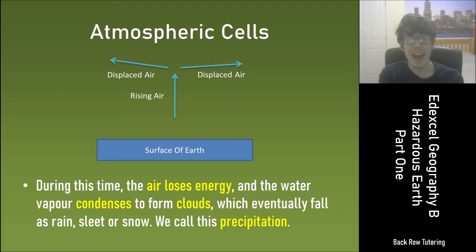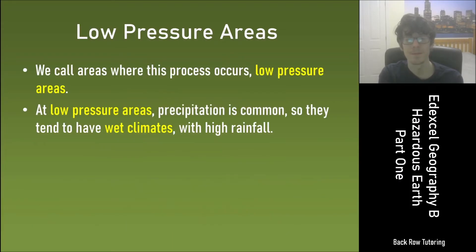During this time the air loses energy and the water vapor condenses to form clouds which eventually fall as rain, sleet or snow and we'll call this precipitation. We call areas where this process occurs low pressure areas. At low pressure areas precipitation is common so they tend to have wet climates with high rainfall.